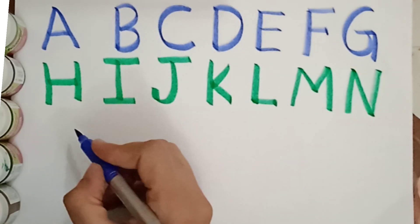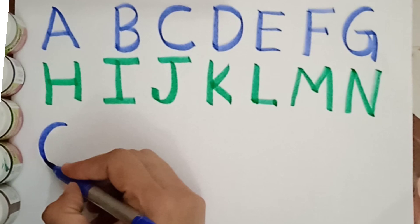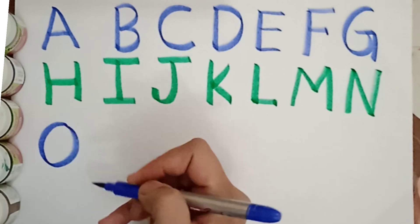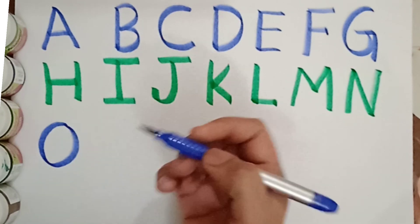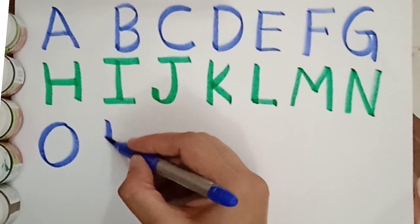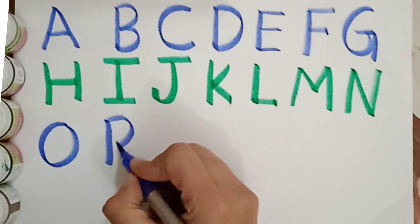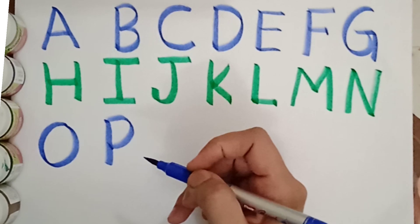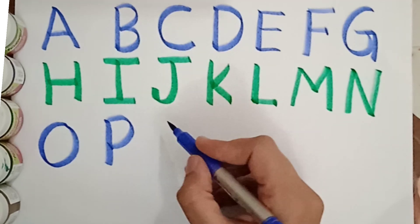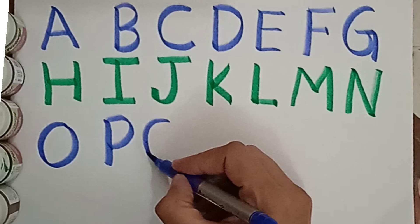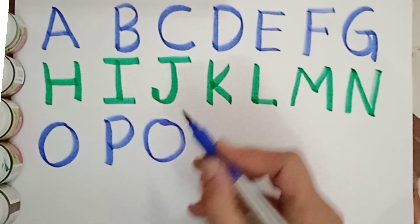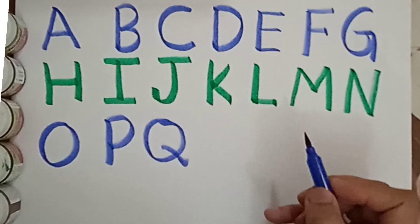Blue color. O. O for owl. O for owl. Next is P. P for parrot. P for parrot. What comes after P? Q. Q for queen. Q for queen.